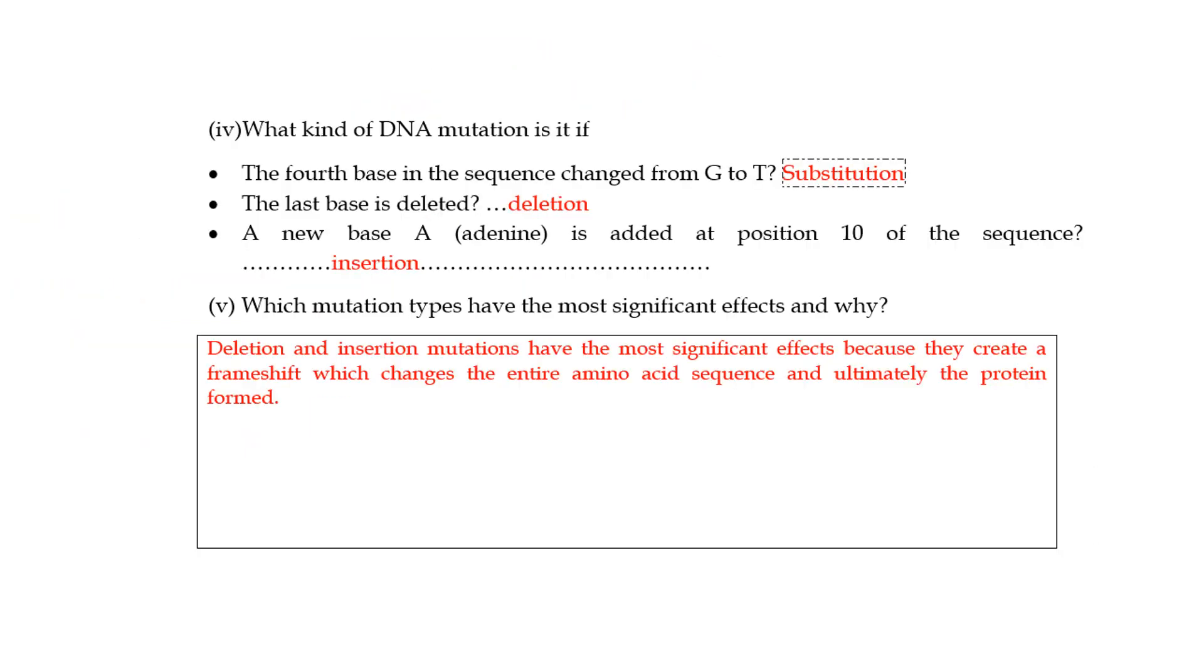Now to the last few questions. In the workbook it says, what kind of DNA mutation is it if the fourth base in the sequence changes from G to T? If you change a base in the DNA sequence, that is called a substitution mutation, and it is the least lethal mutation because if there's a substitution, the DNA might be able to correct the error. If you delete a base, that is called a deletion mutation. If you insert a new base somewhere in the sequence, that is called an insertion mutation.